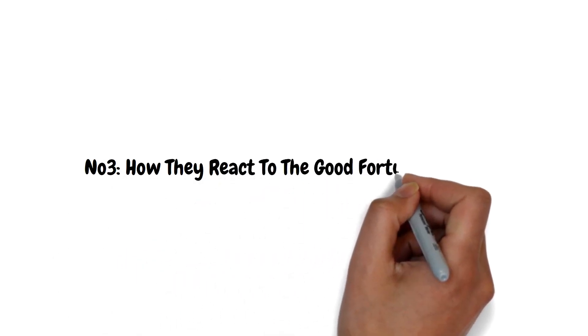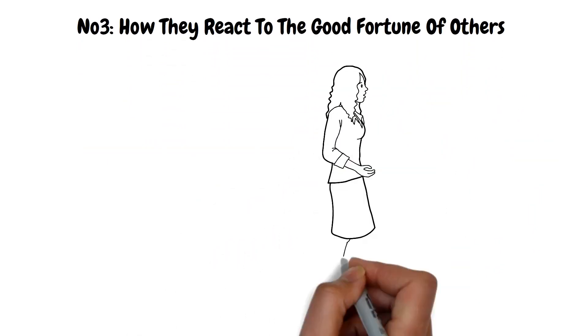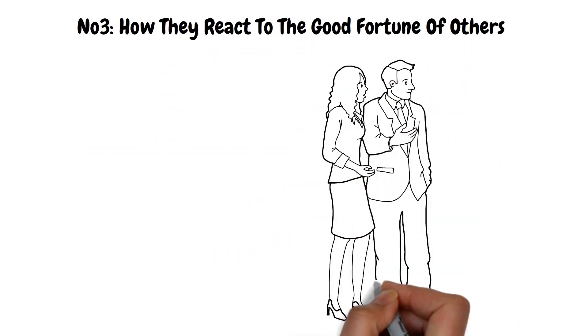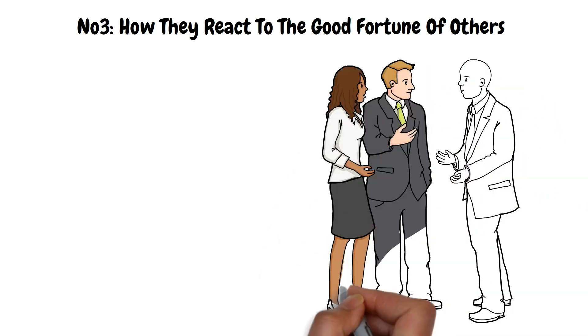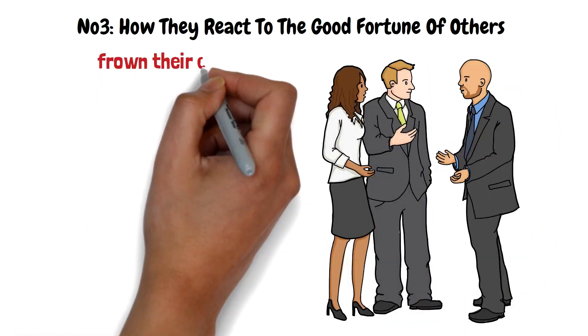How They React to the Good Fortune of Others. If you want to know what someone is like, watch them closely when another person accomplishes something or talks about their achievements in front of them. This is very revealing of one's character. If they frown their eyebrows, smile only with their lips but not with their eyes, or cross their hands, you can conclude that they are not satisfied.